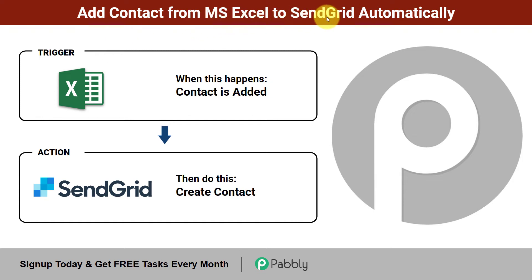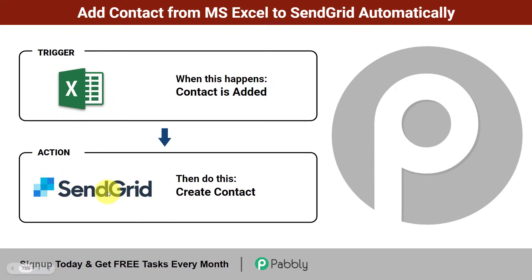Add contacts from MS Excel to SendGrid automatically. If you are getting lots of leads from different sources which you are adding into MS Excel, and you want to add the same contacts to SendGrid email marketing software so that you can send emails to those contacts, you can either manually export and import the file, or create an automation where whenever a contact is added in Excel, the same contact will be created in SendGrid.